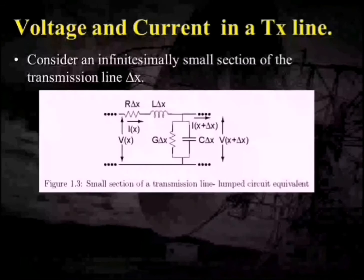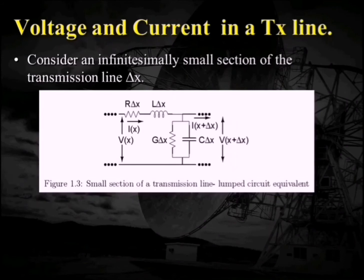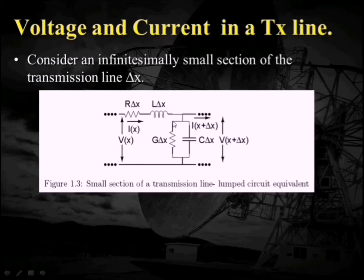Now let us analyze the wave equations. For that, we will consider a very small section of the transmission line as a lumped circuit equivalent, because we have already seen in the equivalent circuit that this part is repeated continuously along the length of the transmission line. We are considering here a lumped circuit, and this length is considered to be very small, equal to delta x, such that the input voltage and output voltage do not change much.